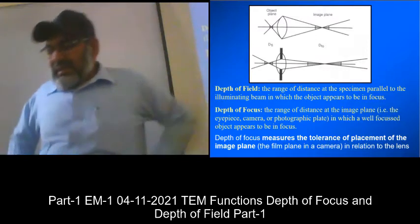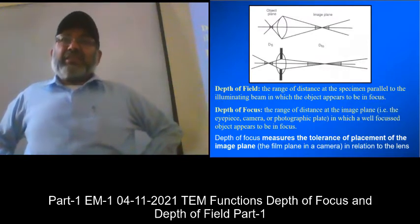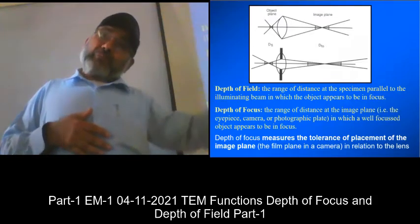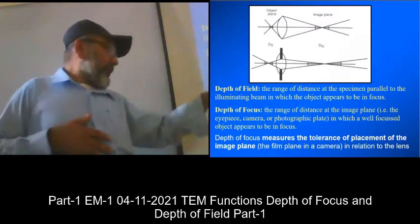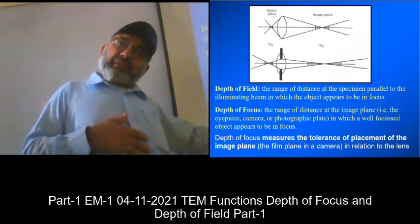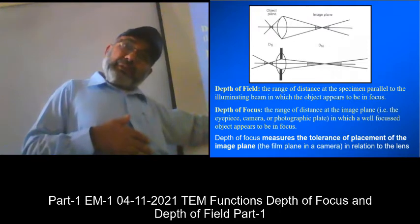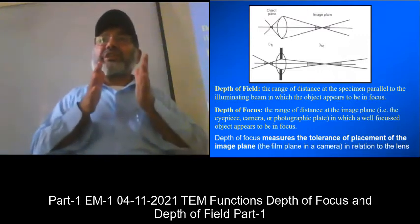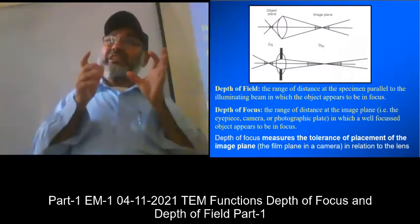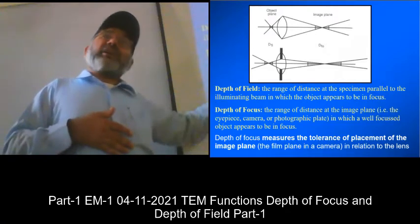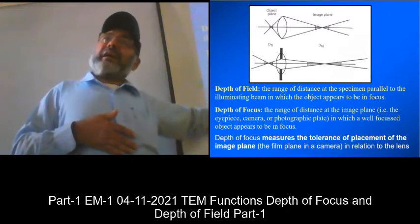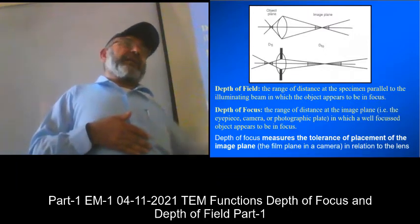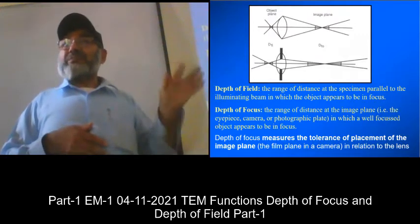Some people call the scanning microscope a three-dimensional imaging device. Although we are always taking the two-dimensional plane, that depth of focus allows you to look into the pore in the sample as well as the surface. If you can focus the pore as well as the surface, this means there is some distance along which if you move within that range, the image is still in focus. That enables you to record the focused image on photographic film or digital camera.